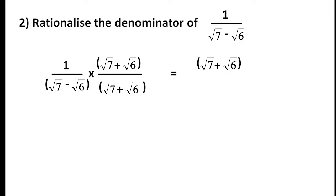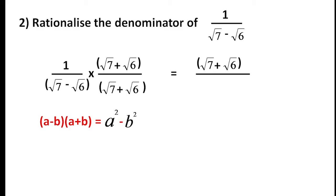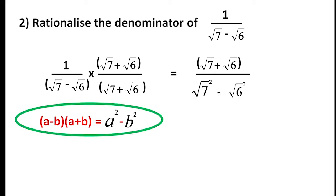The denominator becomes (root 7 minus root 6) times (root 7 plus root 6). This is the a plus b into a minus b formula, which equals a squared minus b squared. So we get root 7 squared minus root 6 squared.